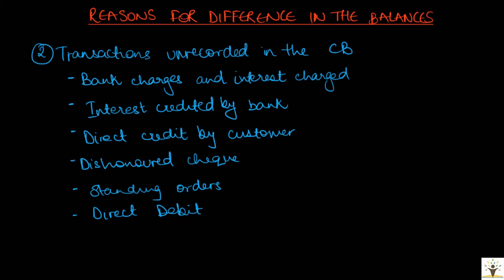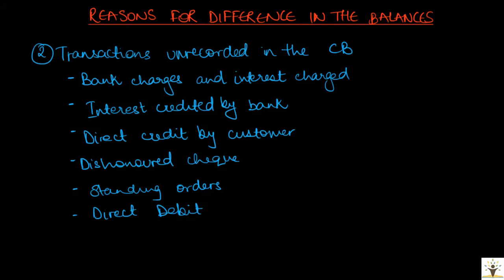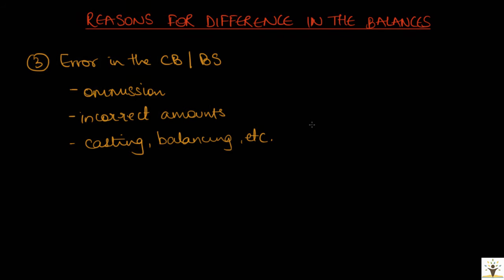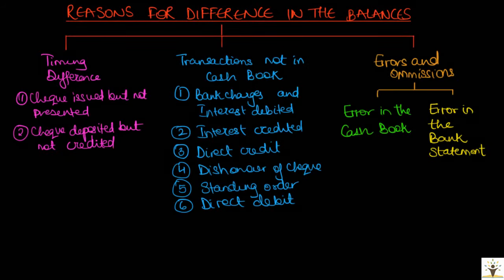There could also be differences in the cashbook and bank statement balance due to errors in either record — for example, omission of a transaction in the cashbook or bank statement, a transaction being recorded at an incorrect amount, or an error in balancing. So here we have seen the various possible reasons for the difference in closing balance as per the cashbook and the balance as per the bank statement.